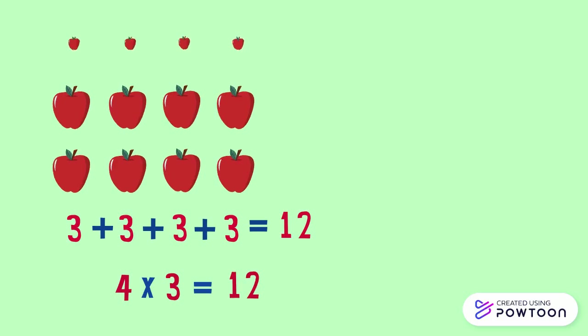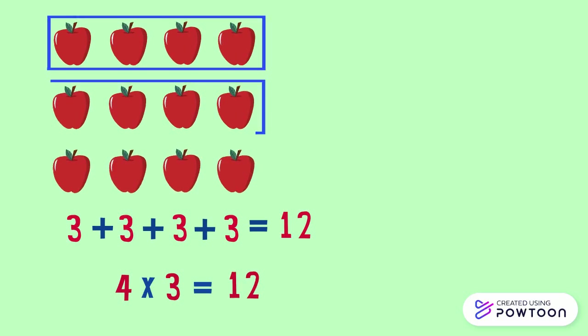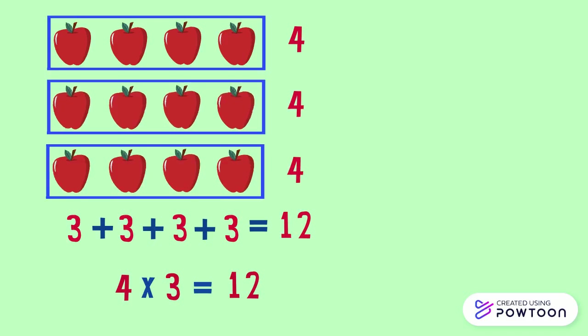We can also group the apples by rows. There are three rows. In each row there are four apples. So we have three groups of four apples each.